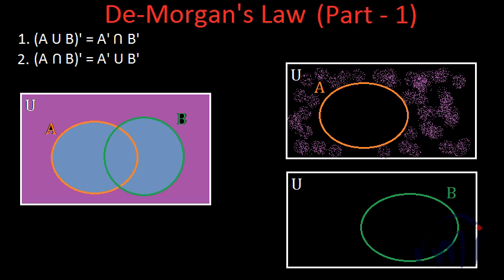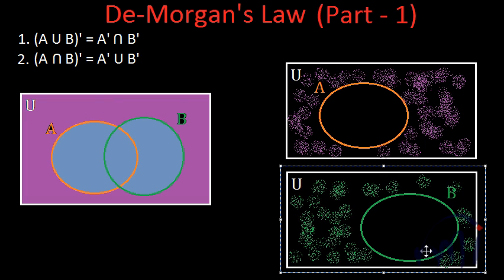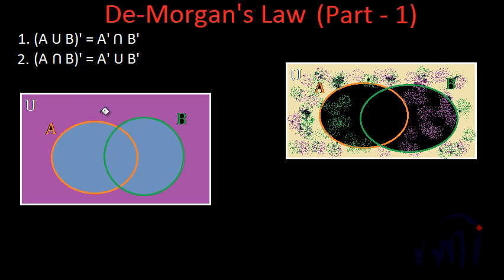Similarly, the complement set of set B is this area — all elements of the universal set which are not in set B. To find the intersection of A complement and B complement, I overlap these two diagrams and look for the area where we have both green and purple color. That area is the intersection of A complement and B complement, and it is exactly the same area shaded in the first drawing. So A union B whole complement equals A complement intersection B complement.